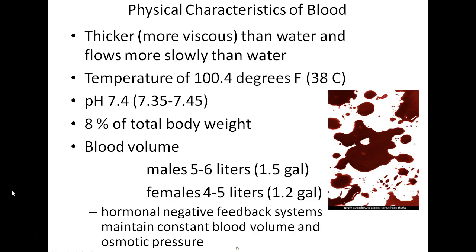Think of blood as a super cocktail for the human body — a substance able to accomplish many different functions. Blood is about four to five times more viscous than water, depending on the amount of dissolved substances, so it flows more slowly than water. Blood temperature is approximately one degree Celsius higher than body temperature, allowing it to warm areas as it travels.